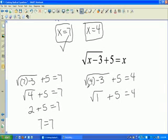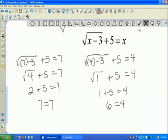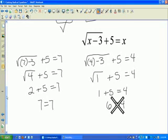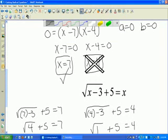1 plus 5 is 6. 6 does not equal 4. Therefore, 4 is not one of my solutions. So the final solution for this problem or example is x equal positive 7.